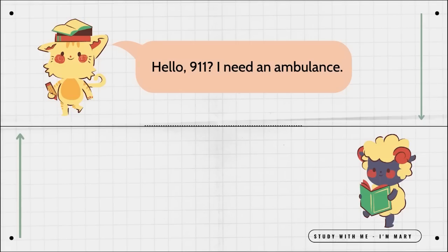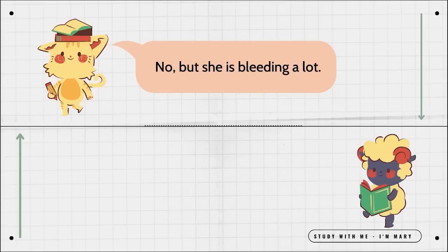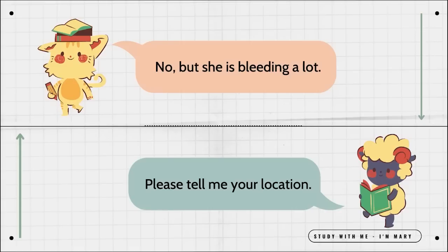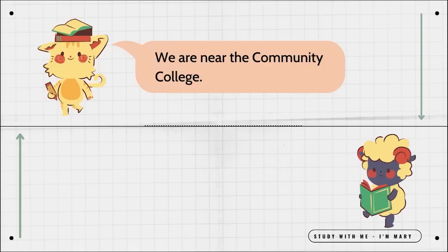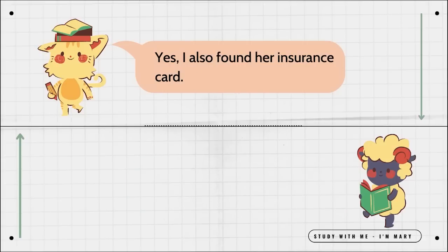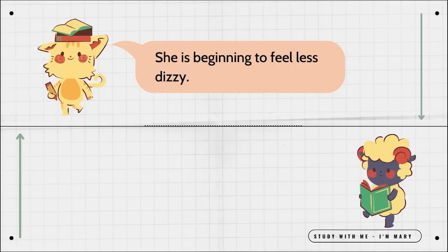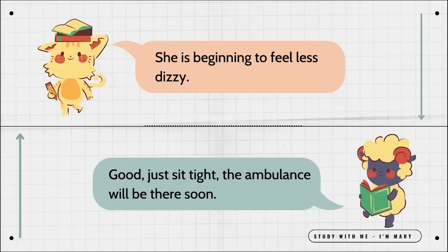Hello, 911. I need an ambulance. What's the situation? My friend fell off her bike and hit her head. Is she unconscious? No, but she is bleeding a lot. Please tell me your location. We are near the community college. Please don't let her stand. Do you have her ID? Yes. I also found her insurance card. Good. You will need those at the hospital. She is beginning to feel less dizzy. Good. Just sit tight. The ambulance will be there soon.